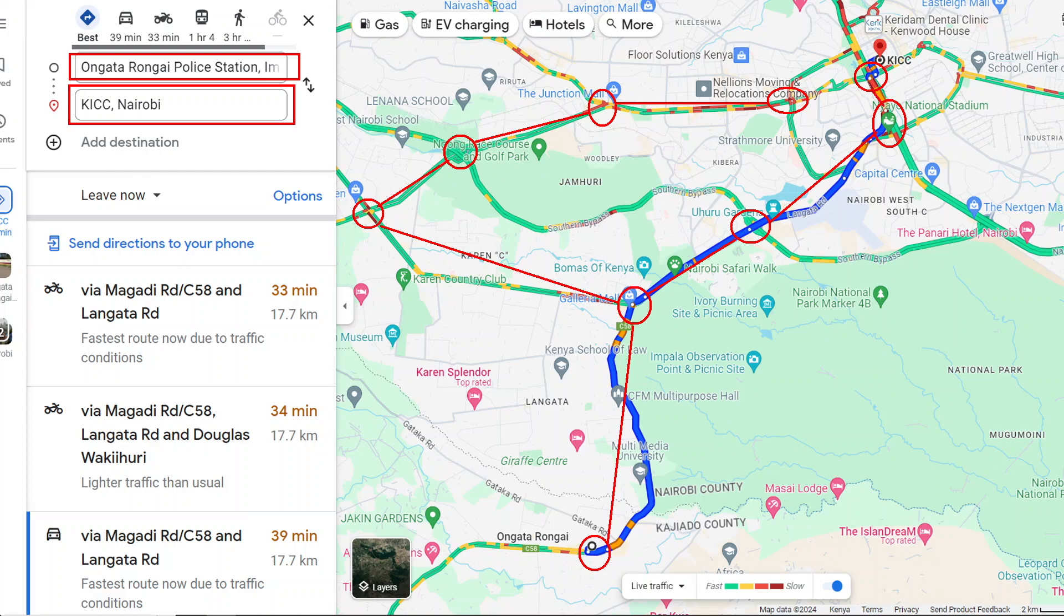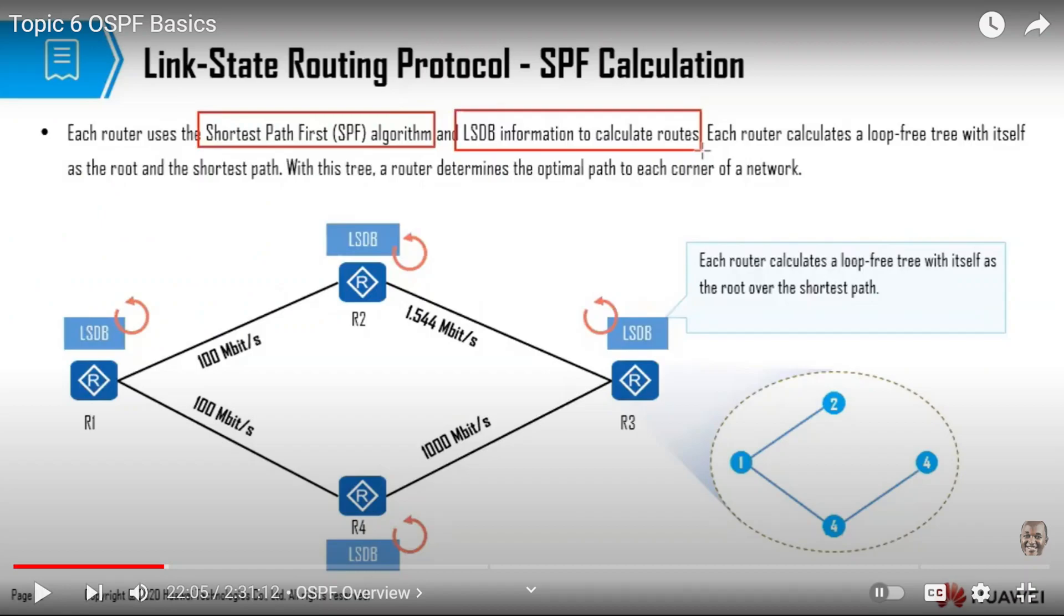So this is exactly how Google Maps calculates the shortest path. Now that shortest path will be calculated depending on other features, for example traffic jam, distance, etc. So that it can be more efficient. But the point I need you to understand here is that Google Maps actually uses the Dijkstra's algorithm to find the shortest path.